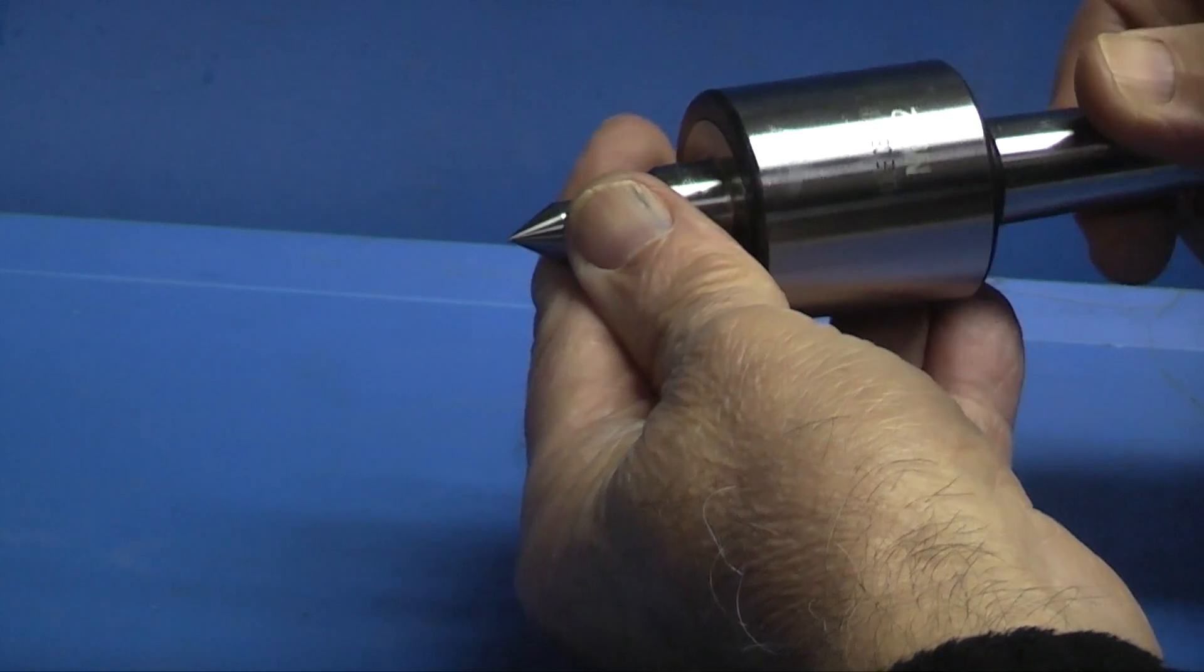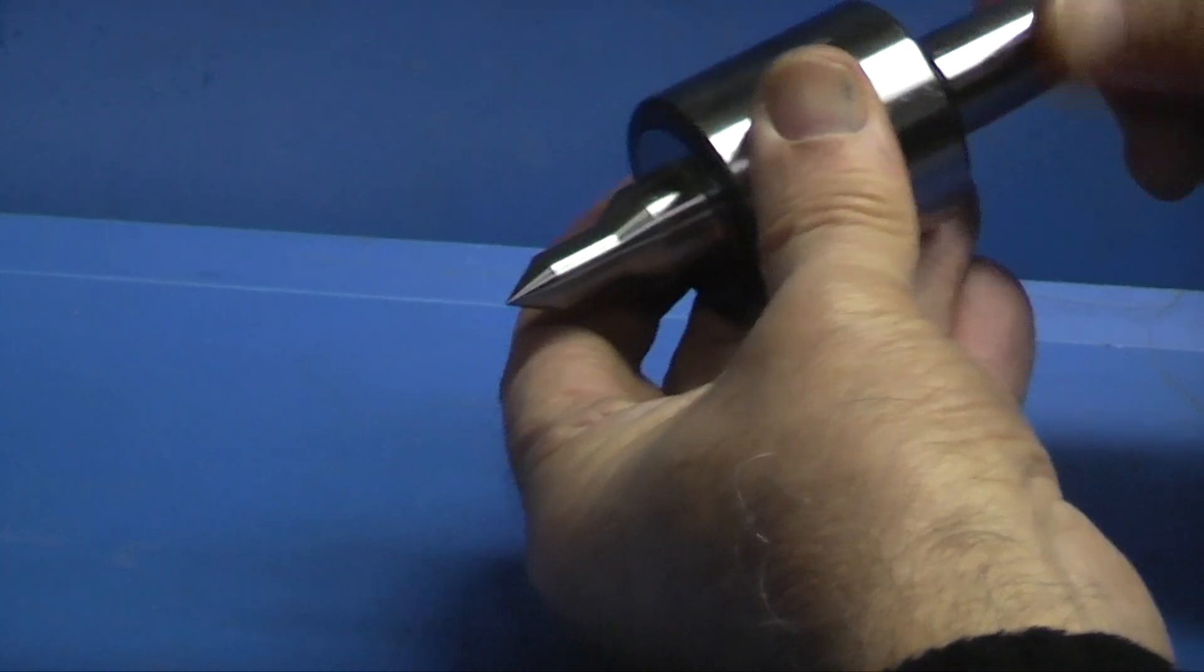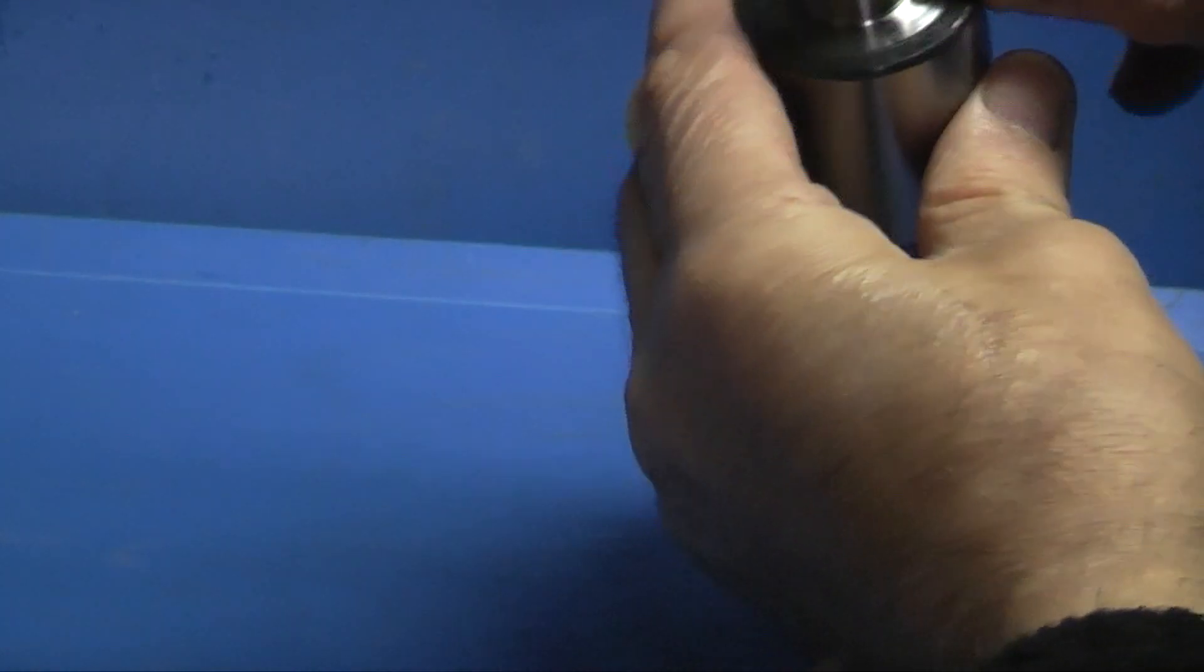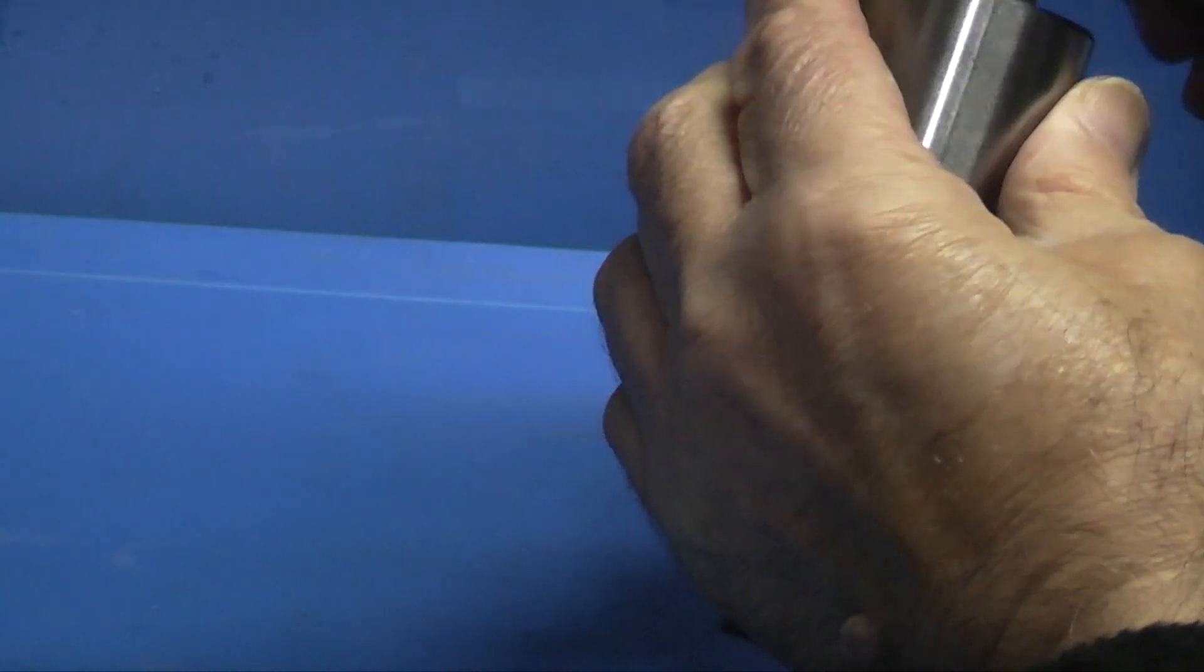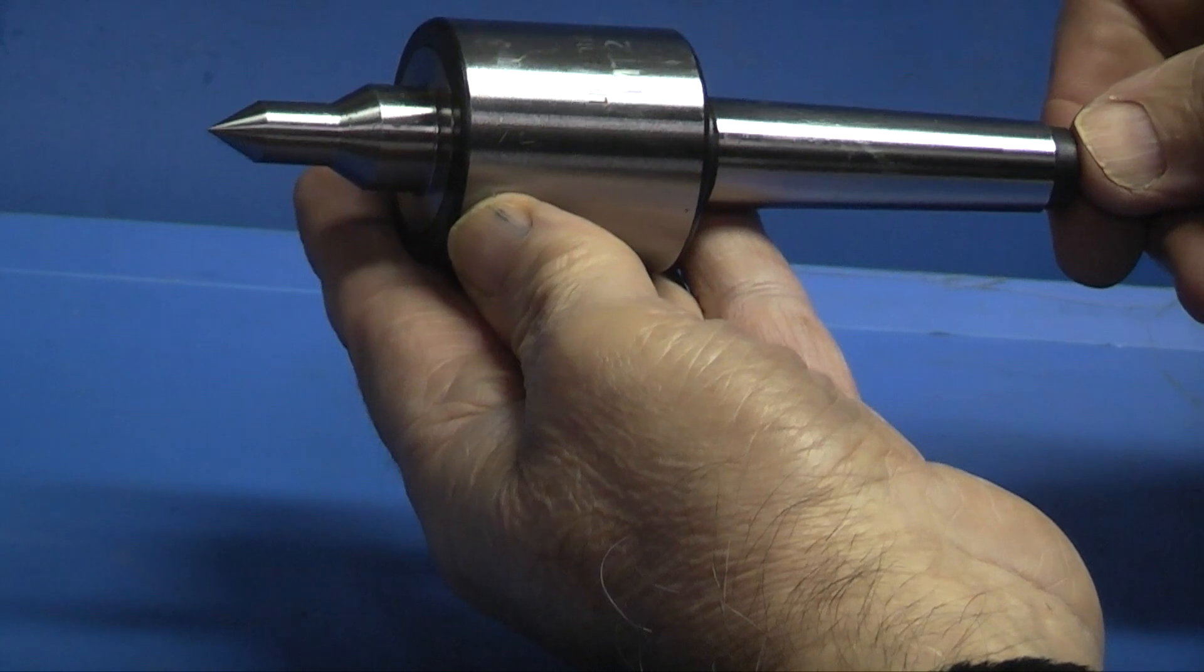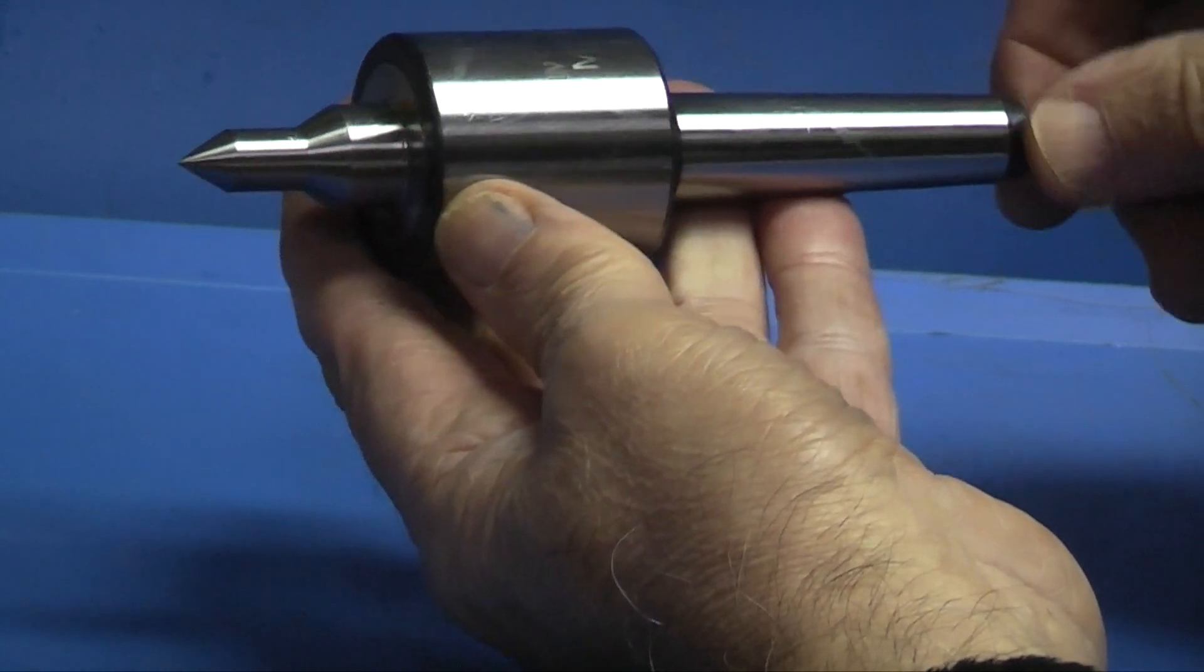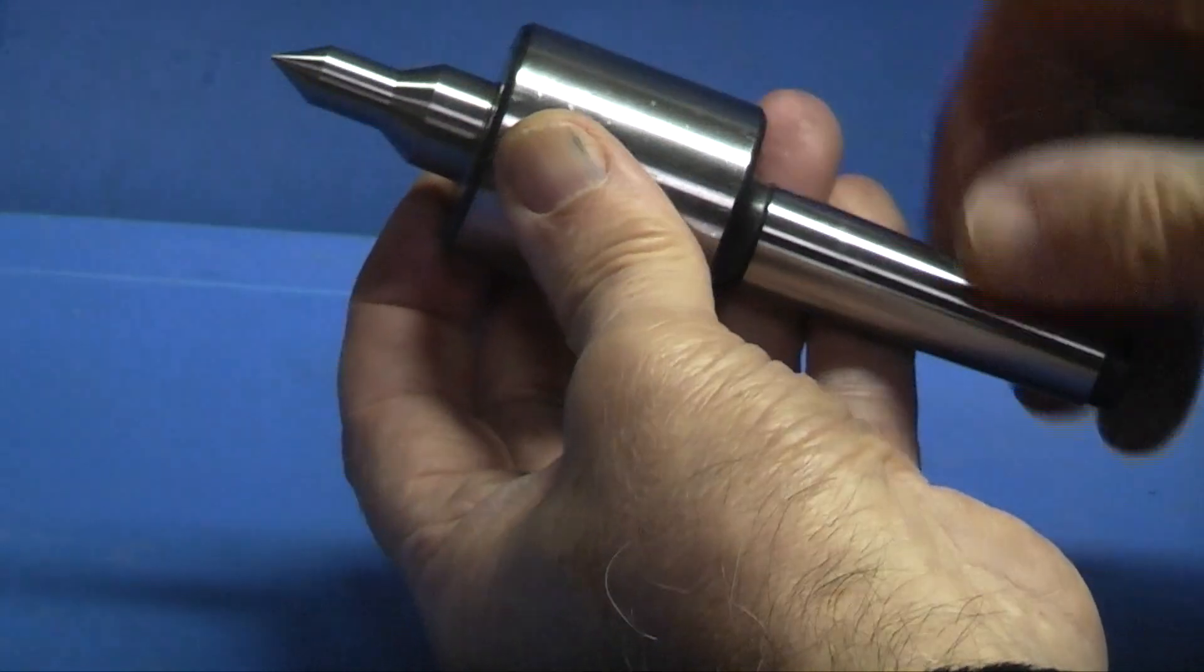It looks nicely made, ground on the morse taper, ground all round with the 60 degree point. Let's go to the lathe, see how it fits in the tailstock and see what the run out is on the end.